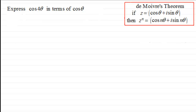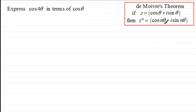Welcome to another video in my series on the applications of De Moivre's theorem. In this example, we look at how we can express the cosine of a multiple angle — in this case cos(4θ) — in terms of cosθ. We do this using the theorem: cos(nθ) + i·sin(nθ) = z^n, where z = cosθ + i·sinθ. We take the real part, cos(nθ), and compare the real coefficients.